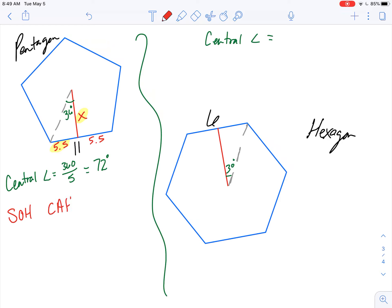So SOH CAH TOA, if I have opposite and the adjacent, if I have O and A, then I'm going to use TOA, or tangent.